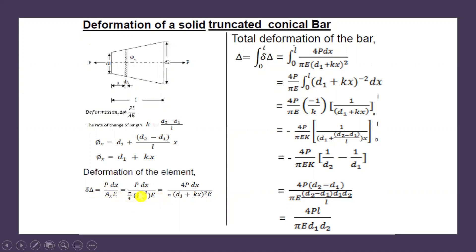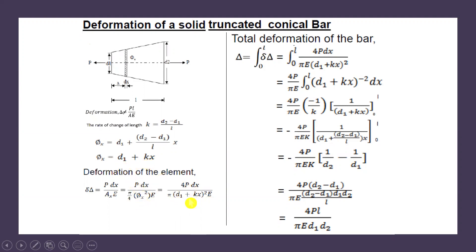We know that φx = D1 + Kx. Substituting φx = D1 + Kx into the expression, the deformation of this element becomes: δ_element = 4P dx / (π · (D1 + Kx)² · E). Here, 4 has moved to the numerator and φx has been replaced by (D1 + Kx). This is the deformation of element dx.